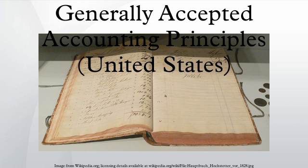FASB Accounting Standards Codification: The codification is effective for interim and annual periods ending after September 15, 2009. All existing accounting standards documents are superseded as described in FASB Statement No. 168, the FASB Accounting Standards Codification and the Hierarchy of Generally Accepted Accounting Principles. All other accounting literature not included in the codification is non-authoritative. The codification reorganizes the thousands of U.S. GAAP pronouncements into roughly 90 accounting topics and displays all topics using a consistent structure. It also includes relevant SEC guidance that follows the same topical structure in separate sections in the codification.